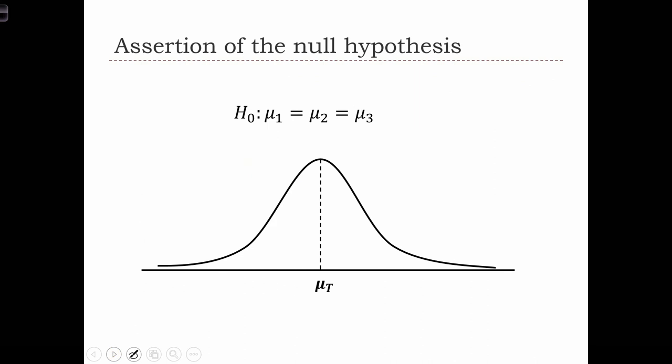So what is the assertion of the null hypothesis implies? Basically what it means is that each of the three groups that we have actually have the same underlying distributions. So the means of the three groups are equal.